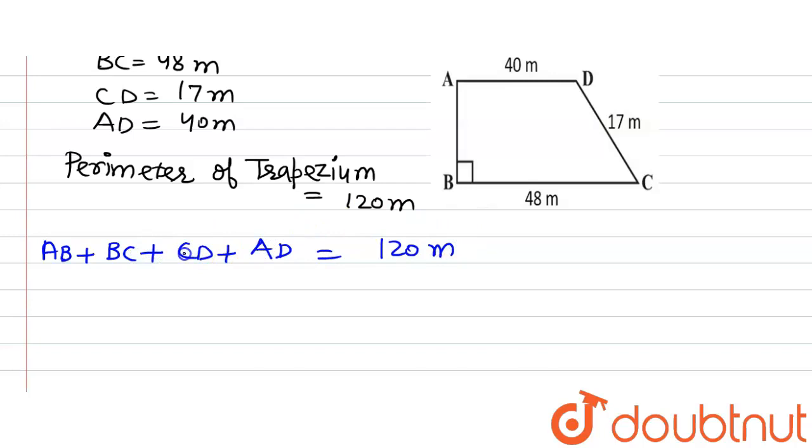So we can write it as AB plus BC plus CD plus AD is equal to 120 meter. Now let's put in the values of BC, CD and AD which are given in the question. So we will get AB plus BC is 48 meter plus CD is 17 meter plus AD is 40 is equals to 120.